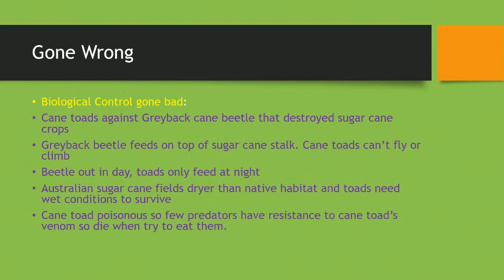Now, cane toads — you've already heard of them. These were introduced to target grey bag cane beetles, which destroyed sugar cane crops by feeding on top of the sugar cane stalks. However, as cane toads can't fly or climb, they weren't going to be able to reach them, and the beetles are active during the day while toads only feed at night.